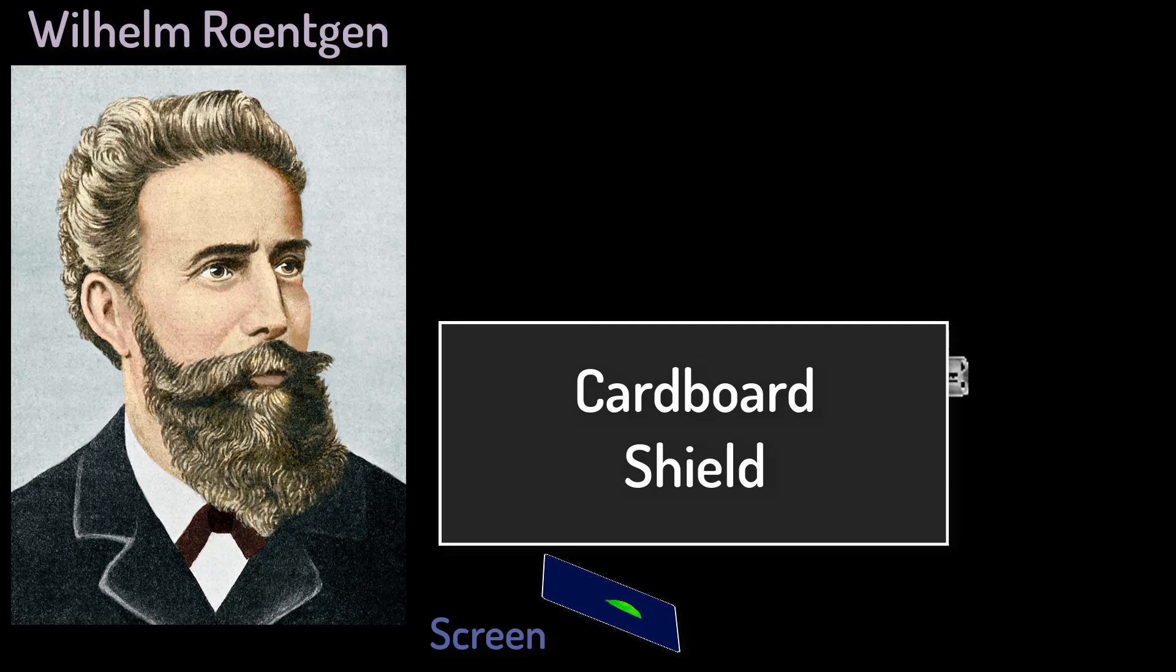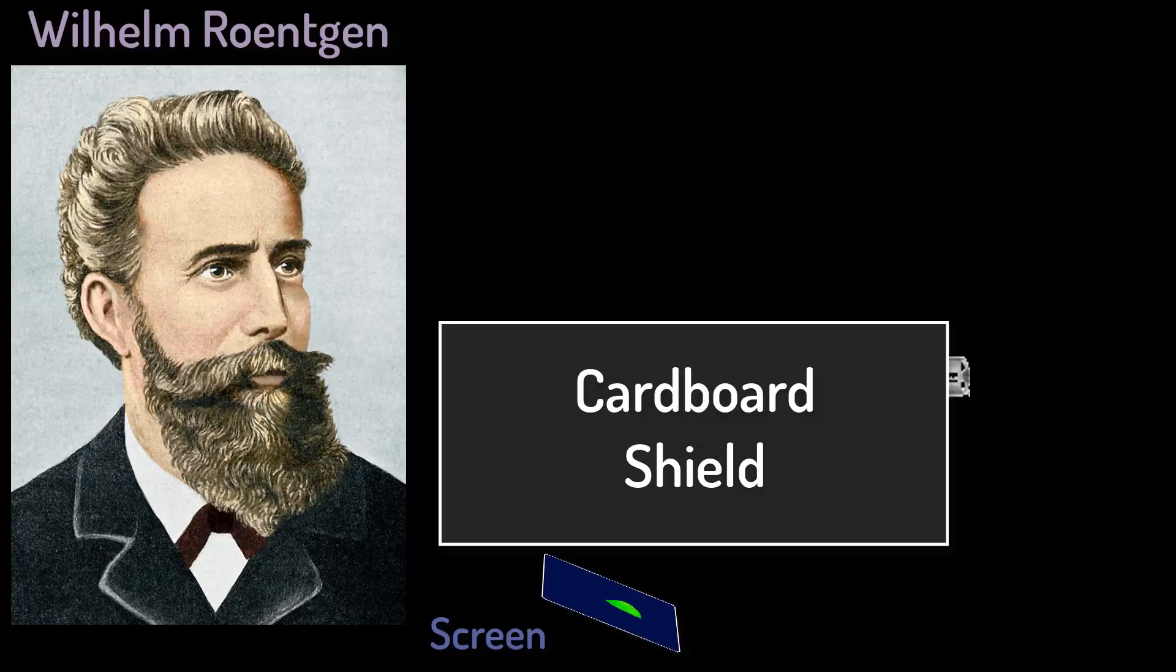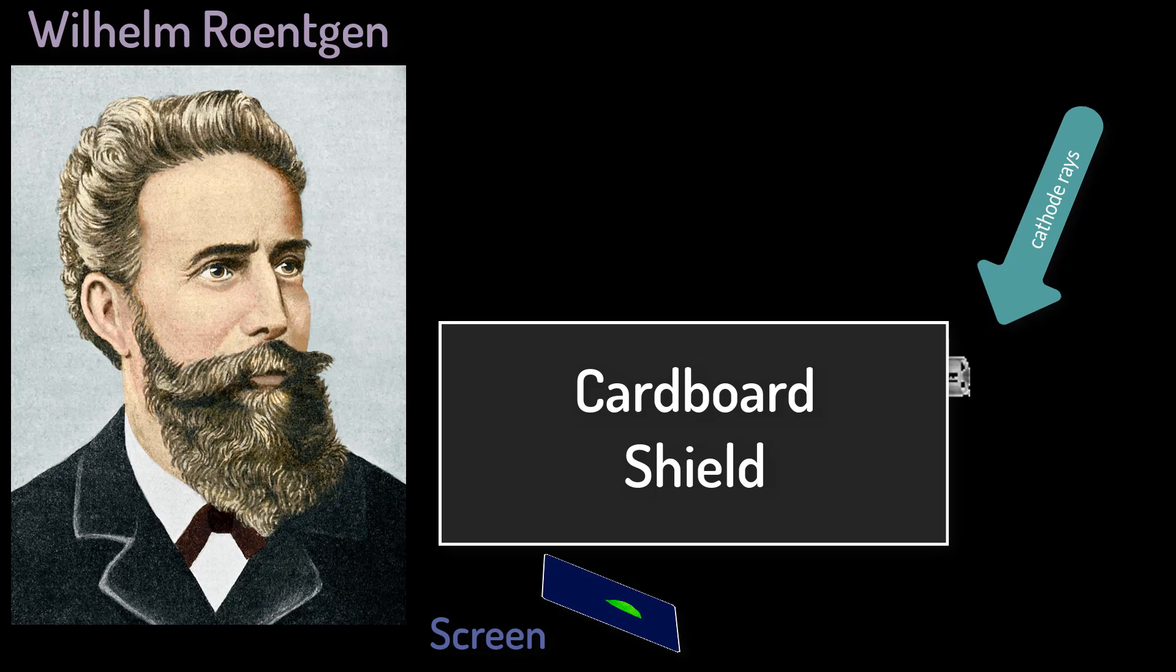As he reached for the screen on the side of his tube, he noticed out of the corner of his eye a glimmer of light on the screen. The effect was one which could only be produced by the passage of light, but no light could come from the tube because the shield which covered it was impervious to any light known. The importance that Röntgen noticed the ray on the side of the tube should not be understated. Cathode rays, i.e. beams of electrons, can make it through thin pieces of metal, but are easily blocked by insulators like cardboard. So Röntgen was expecting to see fluorescence past the aluminum face, but he knew that the cardboard blocked any cathode rays as well as all visible and ultraviolet light. So he wasn't expecting anything out of the side. So what was happening?